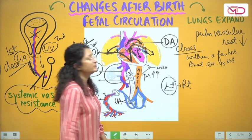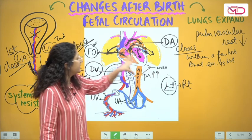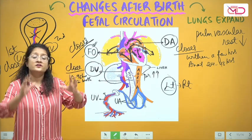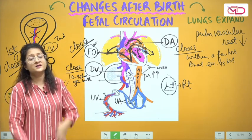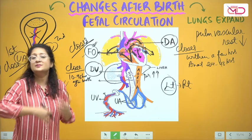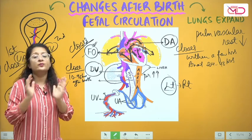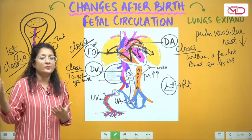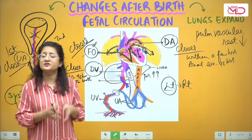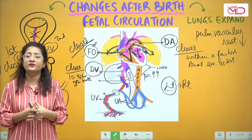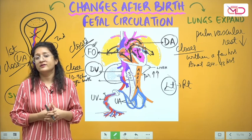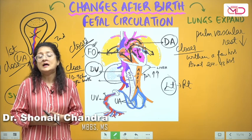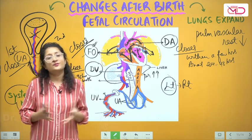This diverts oxygenated blood from the left side of the heart toward the right side, causing an additional load on the right heart — what we call acyanotic congenital heart diseases. Understanding fetal circulation and its changes after birth is therefore very important for clinical topics. With this, I'll end this video on fetal circulation. Please feel free to suggest any other topics you'd like a short video on. Thank you and have a great day.